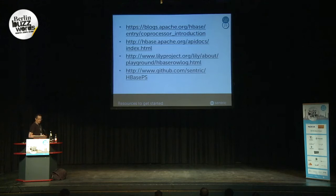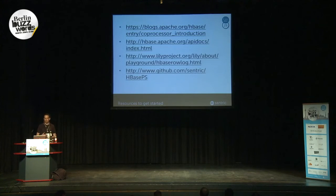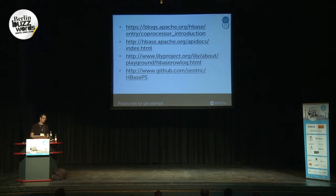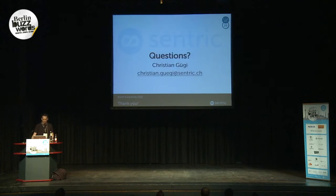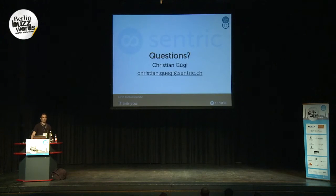Here are some links to additional information. The blog post on the Apache.org website gives a very good overview of co-processors and how they work. It's also worth looking at the HBase API documentation, especially the co-processor part, which is very well documented. You can also find a simple example of our prospective search solution on GitHub. And there is a link for anyone interested in HBase Rolock. That's it for the talk — thank you everybody, I'm happy to take any questions.